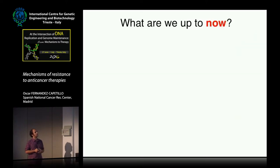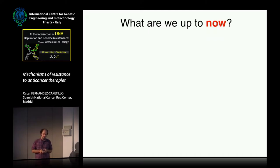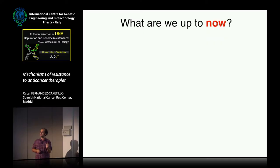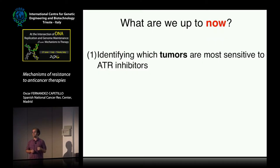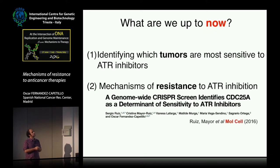What are we up to now? Basically two things. One thing we're doing — in addition to combinations — is identifying tumors that are intrinsically sensitive to the compound, since you want to avoid combinations that could be cytotoxic for the patient. We've been working with Andre on identifying which tumors and which mutations will be particularly sensitive to an ATR inhibitor, but I'm not going to talk about that today.